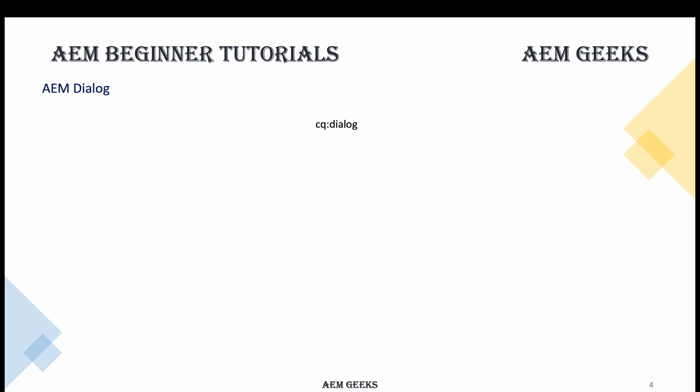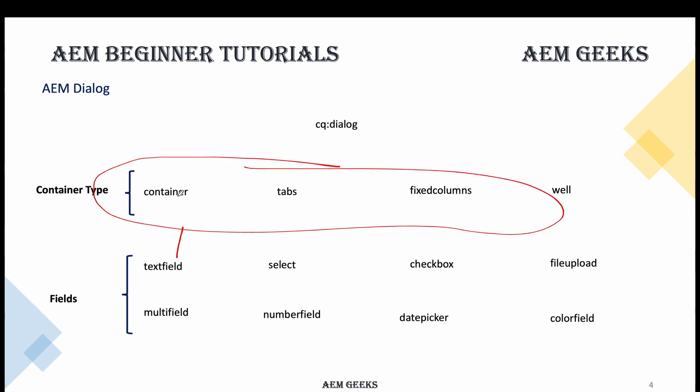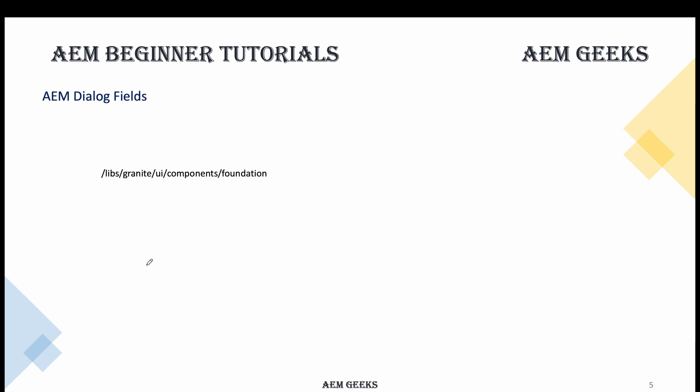In AEM dialogue you have two types of fields — or you could say two types of components. The parent is always cq:dialogue. The first type is container-type fields, which actually hold other fields. These are: container, tabs, fixed column, and well, among others most commonly used. The second type is actual fields where you put actual data for the component — this can be text fields, select, checkbox, file upload, and many others. Containers hold the actual fields.